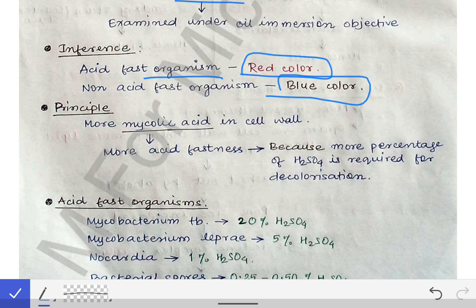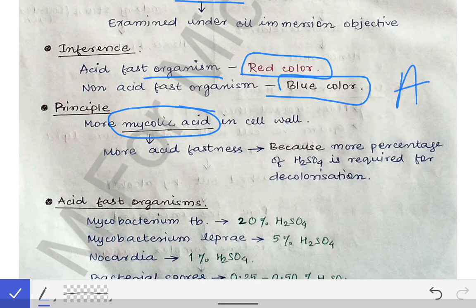The principle behind the ZN stain is mycolic acid in the cell wall. To compare the degree of acid-fastness between organisms, we look at the concentration of H₂SO₄ required for decolorization. For example, if organism A requires 20% H₂SO₄ and organism B requires only 10% H₂SO₄ for decolorization, then organism A is considered more acid-fast than organism B.